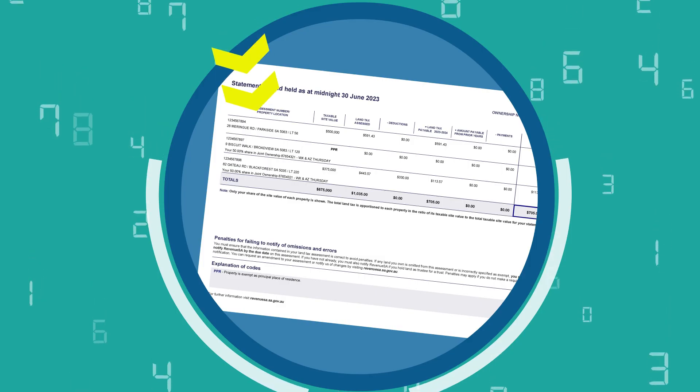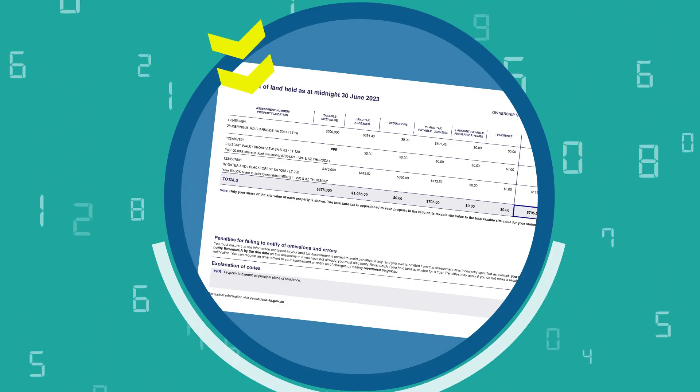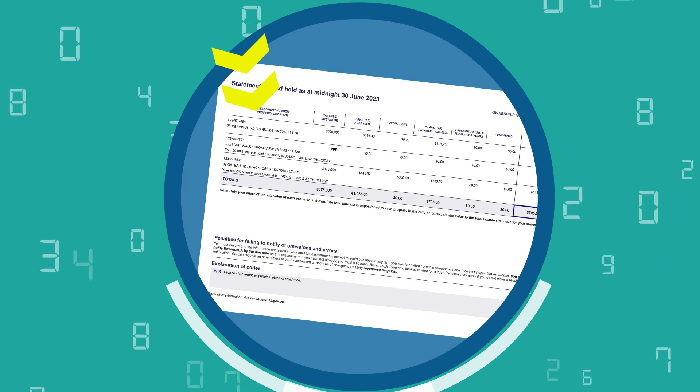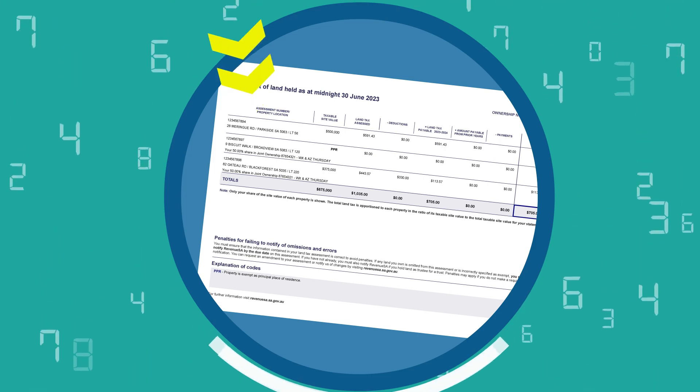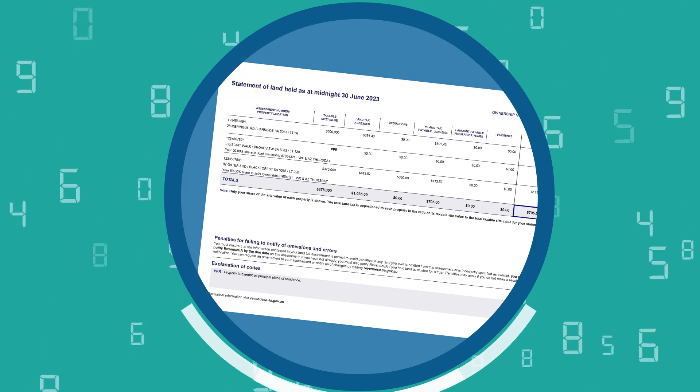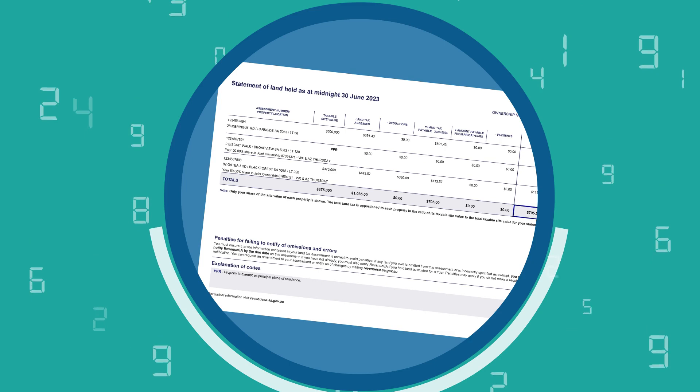A statement of land held shows all of the land you own or partly own in South Australia, even if it's not taxable land. This could include your home or other exempt land.